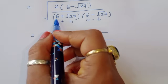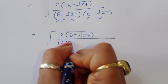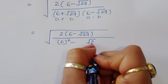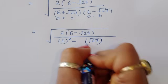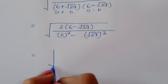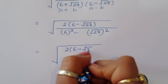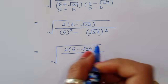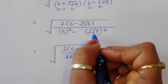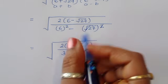In the denominator, we consider a = 6 and b = square root of 27, applying the formula (a + b)(a - b) = a² - b². So the denominator becomes 6² minus (square root of 27)², which is 36 minus 27.